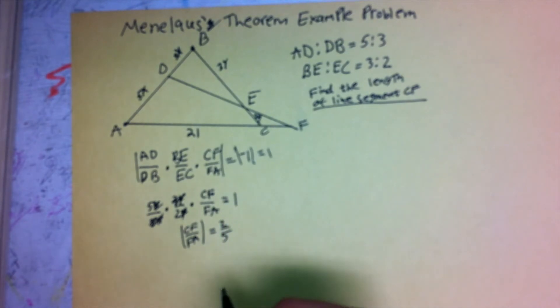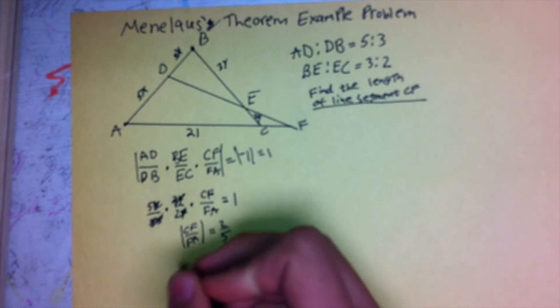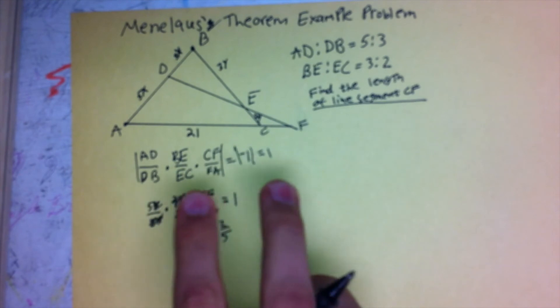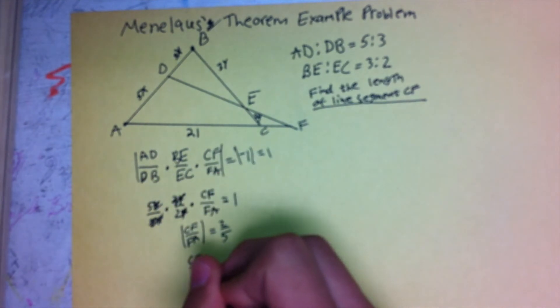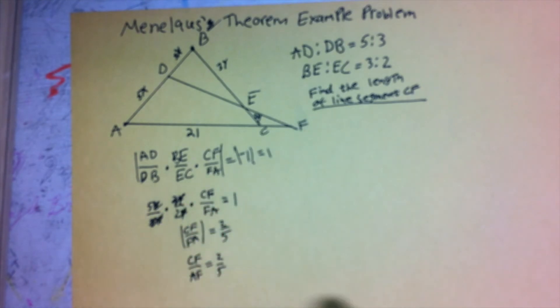And so, what we're going to have to do is, first of all, so that we don't have to keep worrying about the absolute value sign, we're going to flip F and A, so that the line segment is going the other direction. So, we can just write CF over AF equals 2 fifths. Since we're changing the direction, that division is no longer going to produce a negative result.